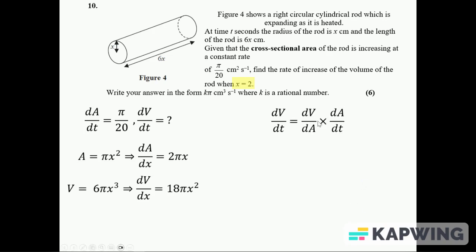Method two, slightly different. I've got dV over dt written out like this again, but in terms of A this time. But I don't know what V is in terms of A. All I can do is write dV over dA as dV over dx times dx over dA, because then I've got the dV over dA here.